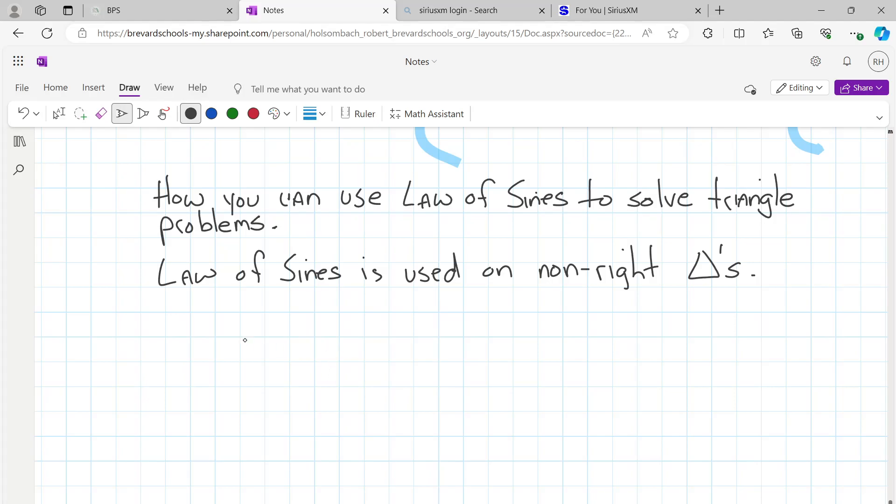The law of sines states that, let's get a triangle on your paper here. If we have triangle ABC, and then we label the sides opposite of each angle, same letter but in lowercase. So opposite of angle A is side a, opposite of angle B is side b, and opposite of angle C is side c.